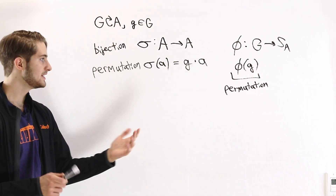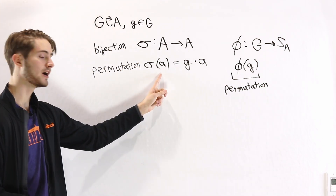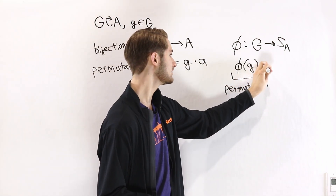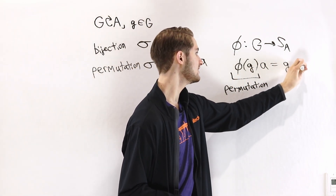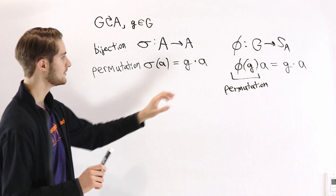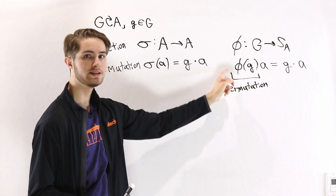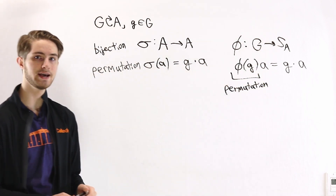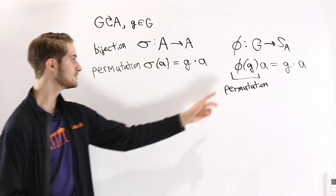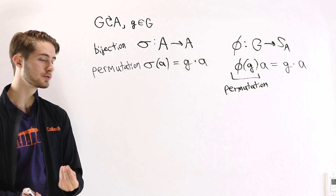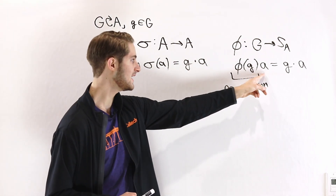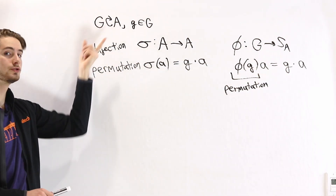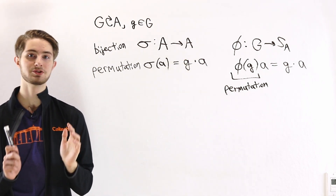We define φ so that this permutation describes the map from A to g·A. So if we take φ(g) and apply it to some element a of the set, we want that to equal g·a. This equation defines the way φ(g) permutes every single element of the set, giving us a specific permutation associated with φ(g) for every element of the group. Because g·a comes from a group action, this map φ is going to have some special properties.